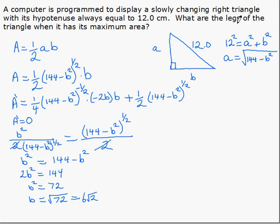So there's the B value that gives us the maximum area. It asks for the legs of the triangle, so we need A and B. We know A from this equation, so A is equal to the square root of 144